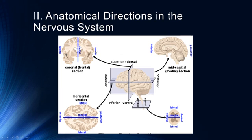The coronal or frontal section goes vertically through the brain. Anything towards the middle is medial; anything towards the outside is lateral. The sagittal section goes down the full length of the brain. The frontal part is anterior and the back is the posterior portion of the brain. The horizontal section goes horizontally to the ground. Again we have medial and lateral, and then anterior and posterior as directional terms in these planes.